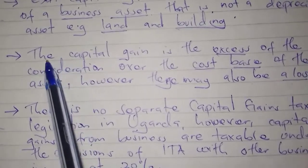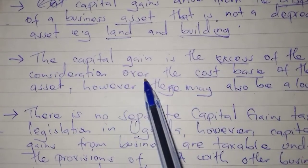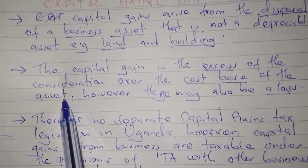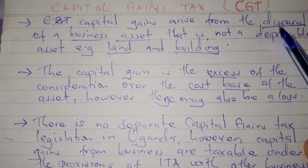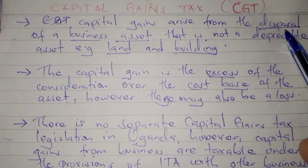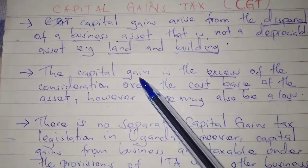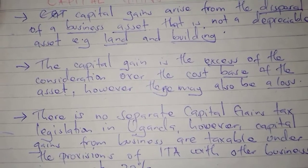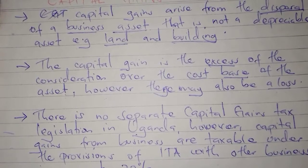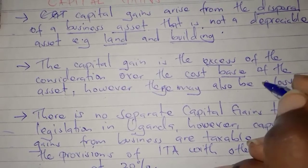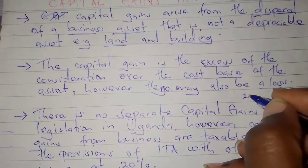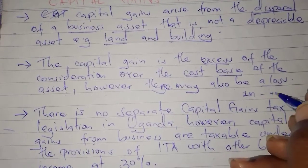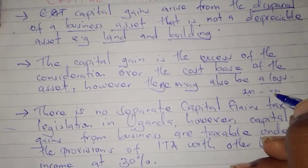The capital gain is the excess of the consideration over the cost base of the asset — it's the gain on disposal. Capital gains arise only on the disposal of a business asset. For example, if the net book value of an asset is 2 million and you sell it at 4 million, the difference — the excess consideration over the cost base — is what we call the capital gain.